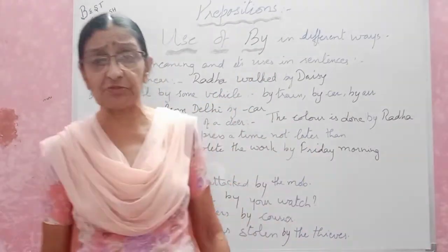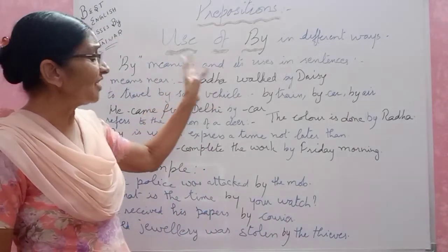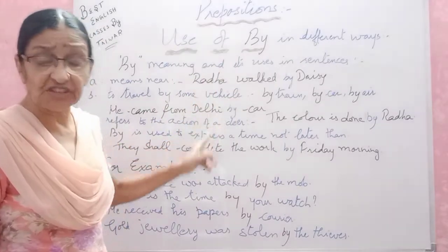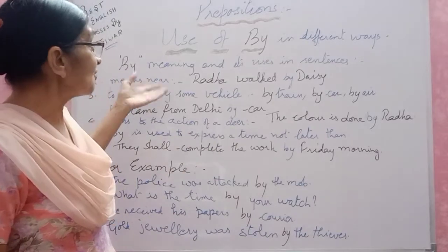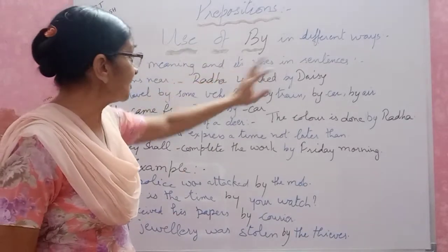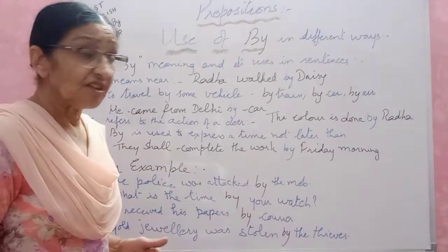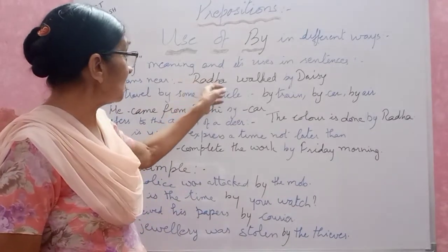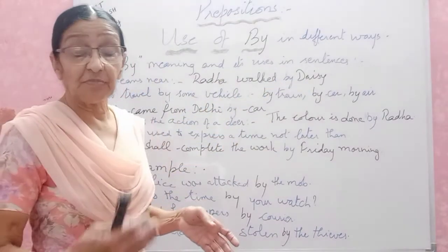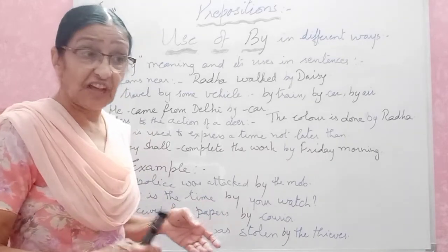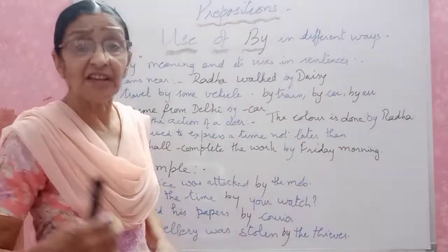So let's begin. Today we will look at what is the meaning of 'by' and where it is used, according to the sentences given. First one: 'by' means 'near'. The sentence would be: 'Rather walk by Daisy.' It means Rather is walking near, side by side with Daisy. She is walking by her, so she is walking by Daisy.